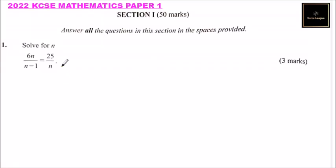This is 2022 KCSE mathematics paper 1, question 1. This section consists of 50 marks up to number 16 with questions ranging from 1 to 3 marks. We are instructed to answer all the questions in the spaces provided. So we have question number 1.